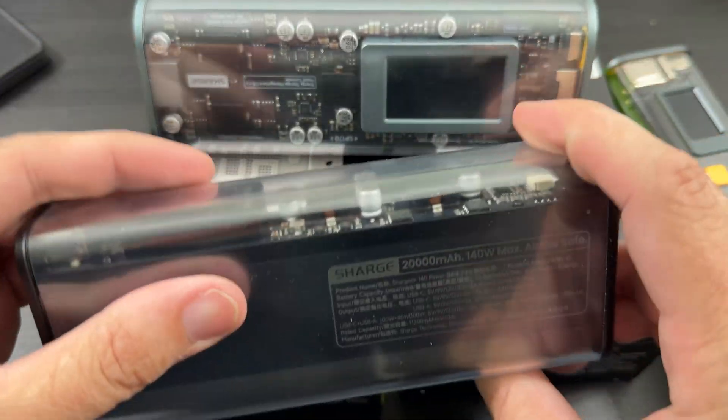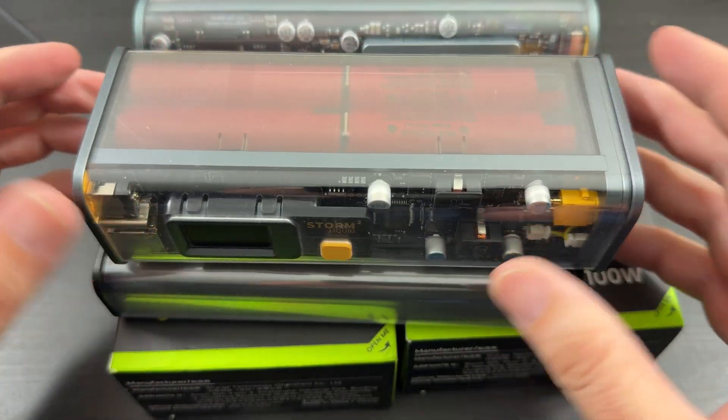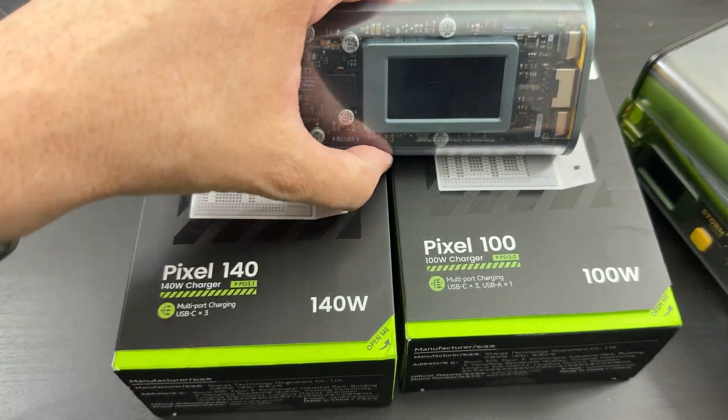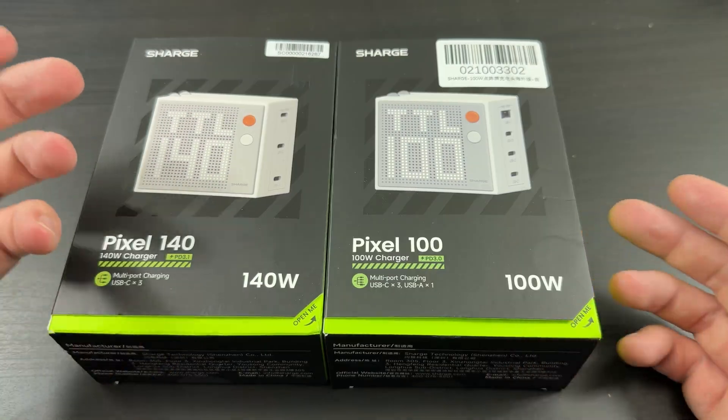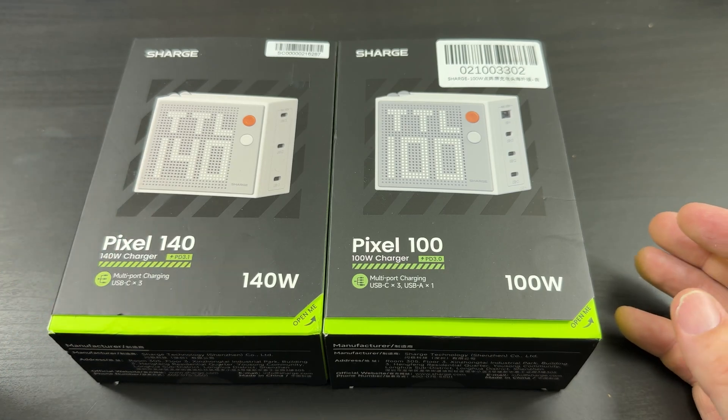...like their 170 watt one here, this 100 watt, and this one 100 watt. So now we can charge up these power banks from Charge with a Charge device. All right, so here's the front of the boxes. This is the 140, this is the 100, basically just the difference is 40 watts more.